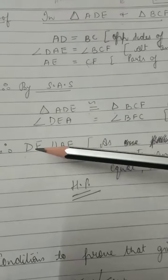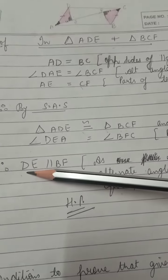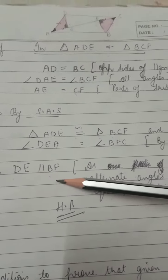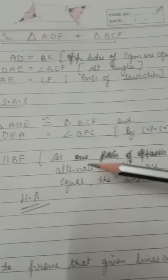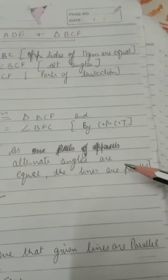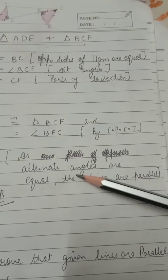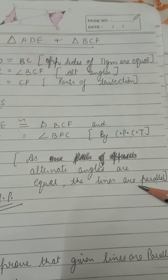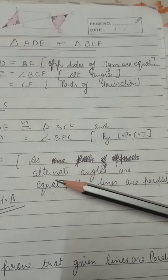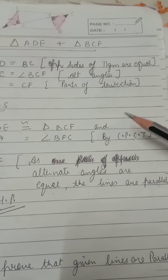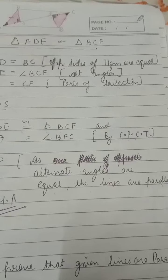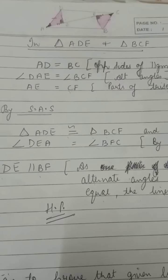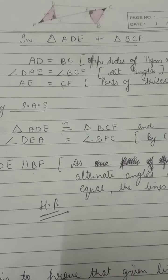By SAS the two triangles are congruent, so the corresponding angles are equal by CPCT. Since one pair of alternate angles are equal, DE is parallel to BF. Hence the question is proved.